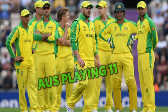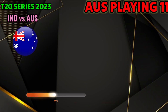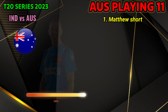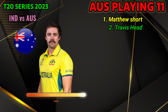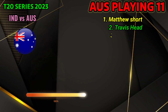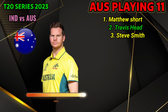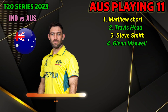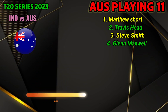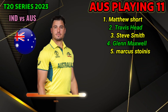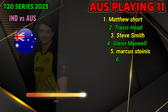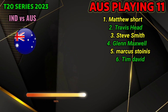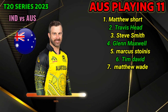Australia team playing 11: 1. Matthew Short, 2. Travis Head, 3. Steve Smith, 4. Glenn Maxwell, 5. Marcus Stoinis, 6. Tim David — right-handed batsman, 7. Matthew Wade.